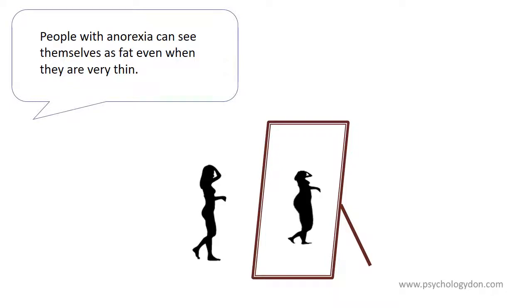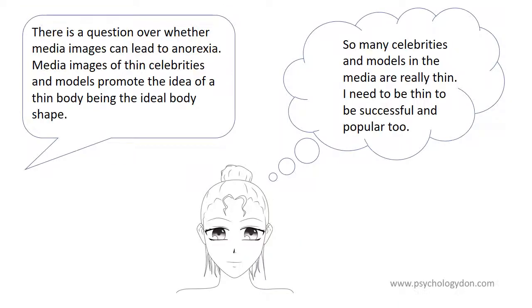People with anorexia can see themselves as fat even when they are very thin. There's a question over whether media images can lead to anorexia. Media images of thin celebrities and models promote the idea of a thin body being the ideal body shape. This hasn't always been the case — in the past, a more curvaceous body has been considered attractive. So a girl may think that as many celebrities and models in the media are really thin, she needs to be thin to be successful and popular too.